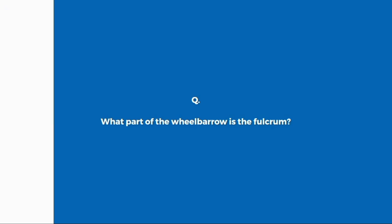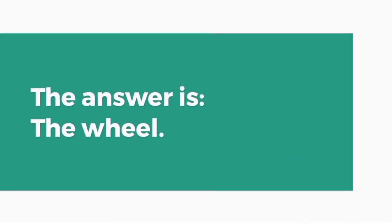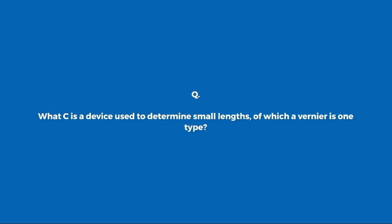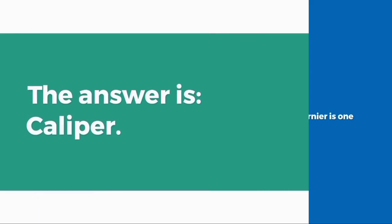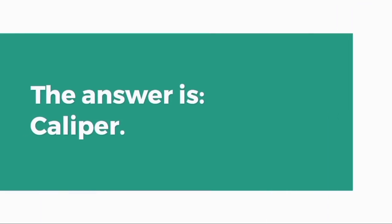What part of the wheelbarrow is the fulcrum? The wheel. What C is a device used to determine small lengths, of which a vernier is one type? Caliper.